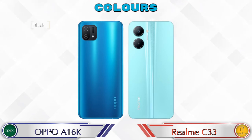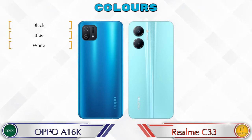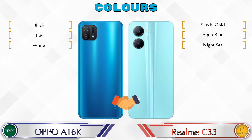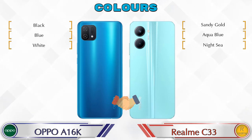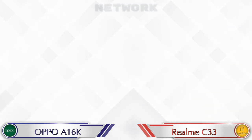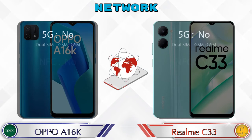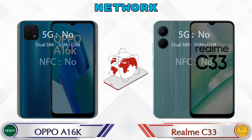Let's see the secondary features of both phones. Talking about color options, both phones have three color options. Let's see the details about network, Bluetooth, GPS, and Wi-Fi.